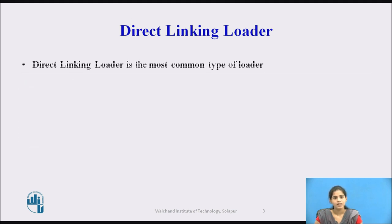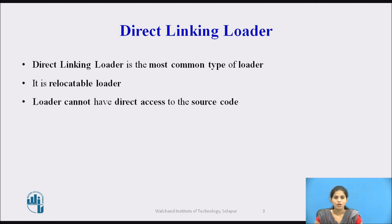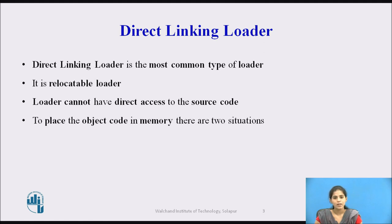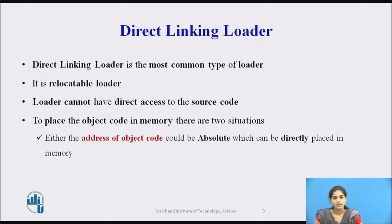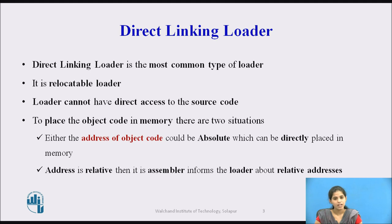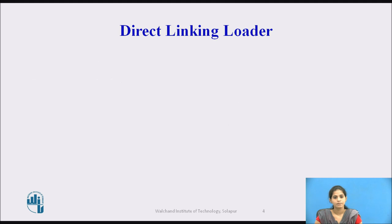The direct linking loader is the most common type of loader. It is a relocatable loader. The loader cannot have direct access to the source code. To place the object code in memory, there are two situations: either the address of the object code could be absolute, which can be directly placed in memory, or if the address is relative, then it is the assembler's responsibility to inform the loader about their relative addresses.